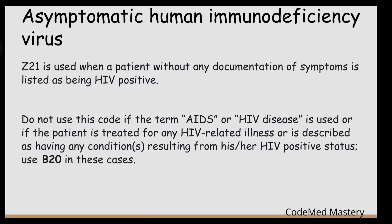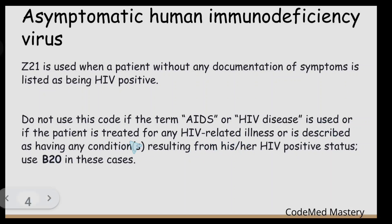The next guideline covers asymptomatic HIV. Code Z21 is used when a patient without any documentation of symptoms is listed as being HIV positive. Do not use Z21 if the term AIDS or HIV disease is used, or if the patient is treated for any HIV-related illness, or is described as having any condition resulting from their HIV positive status.